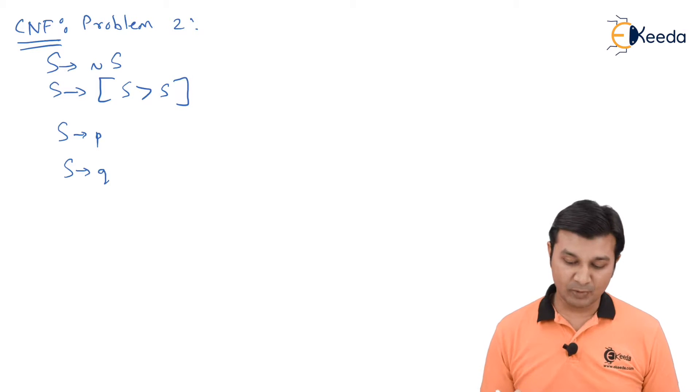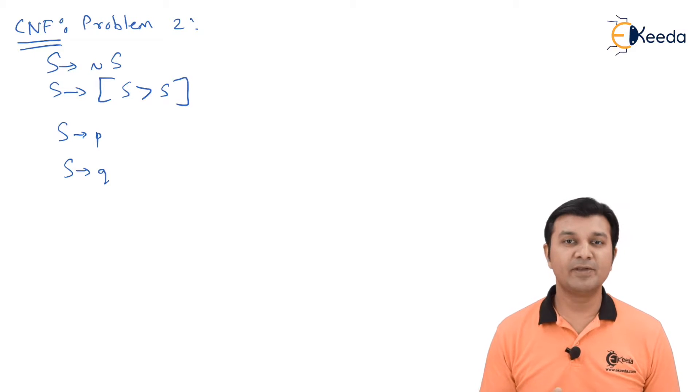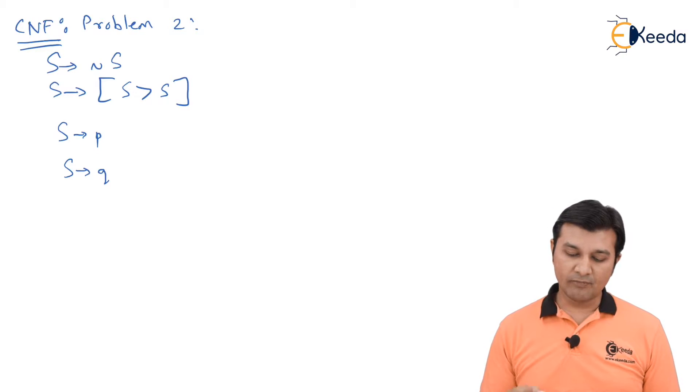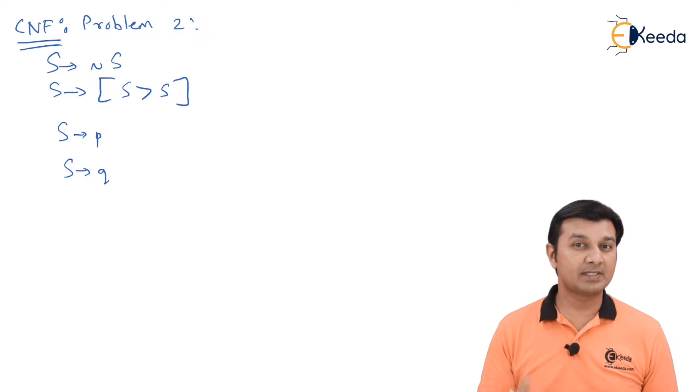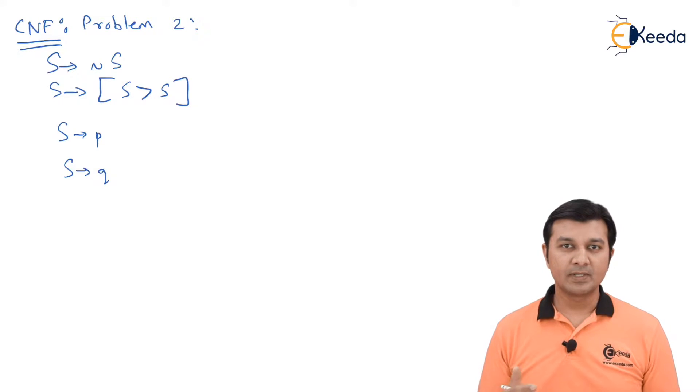Frankly speaking, in this problem, I see a single variable which is S. And in fact, it is consisting of a single production also. Instead of writing the productions one below the another, I could have written everything separated by a slash. But this is written in this form just for having a more clarity of the problem. So, without wasting time, let's get started to the solution.